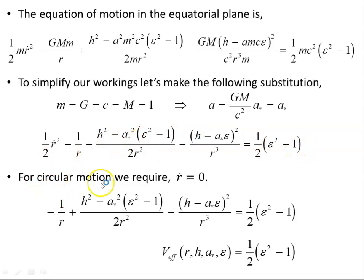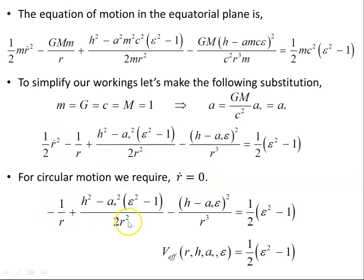For circular motion we require R-dot — that's the derivative of the radial coordinate with respect to proper time — to be zero. So that term drops out and the equation becomes the effective potential equal to the energy of the particle in the orbit.